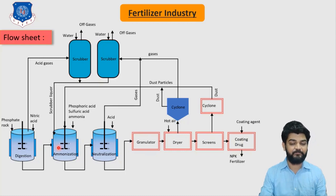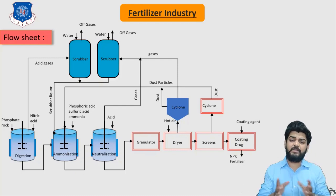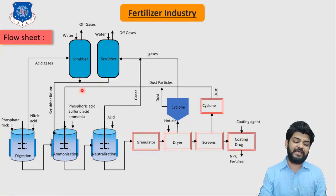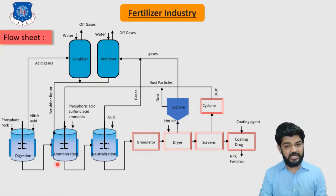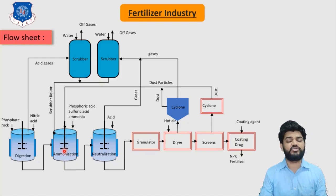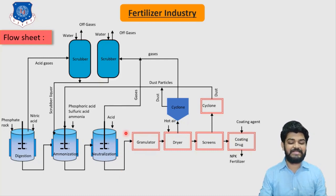The product stream from the first reactor — phosphate slurry — is directly sent to the second reactor, the ammonization reactor, where phosphoric acid, sulfuric acid, and ammonia are added. This reaction is also exothermic, so a jacketed reactor with cooling water and continuous stirring is provided. The product from ammonization is sent to the neutralizing tank, where acid is added to neutralize it, and then the product goes to the granulator.